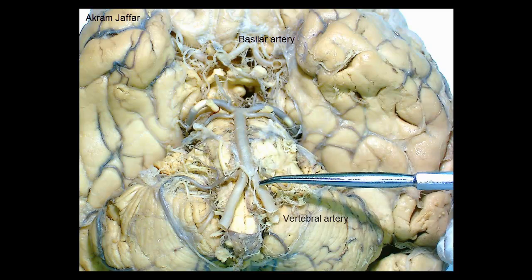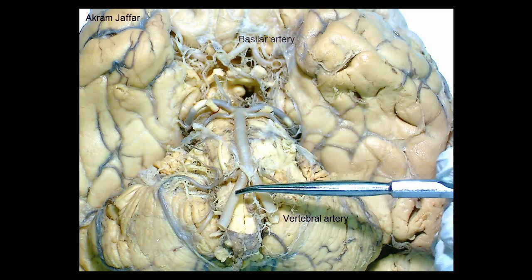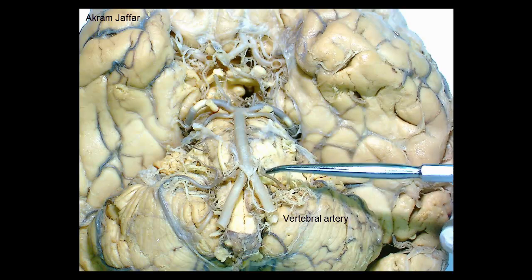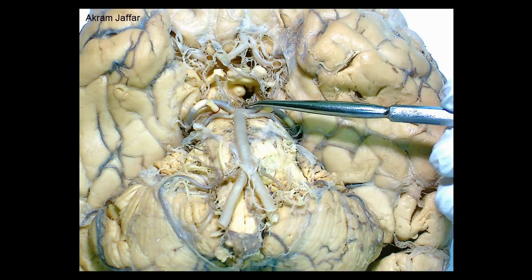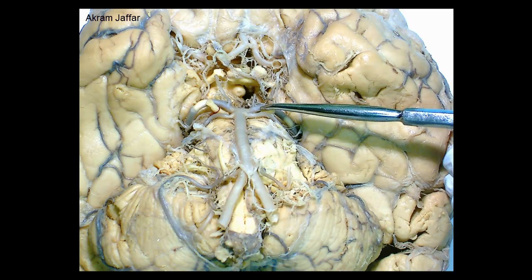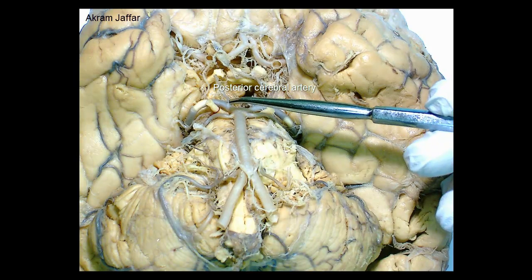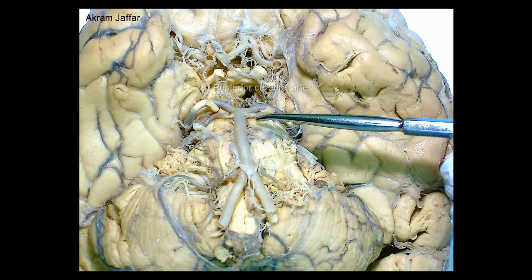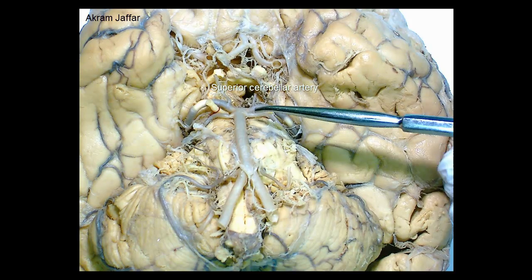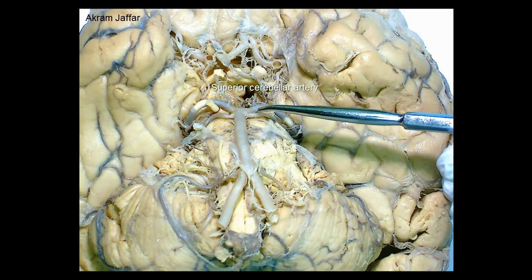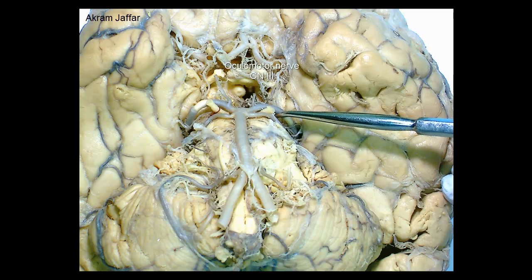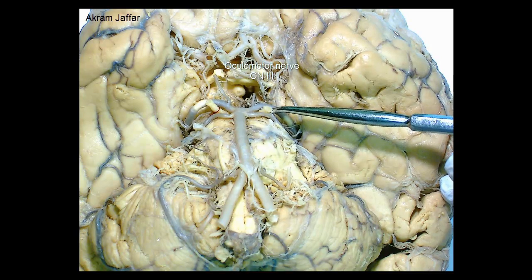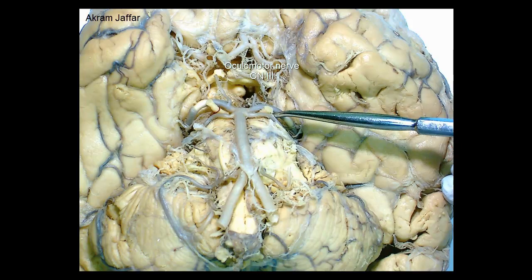This groove is where the basilar artery is located. The basilar artery is formed by the union of the two vertebral arteries, which unite at the junction of the medulla and pons. It continues upwards until it reaches the level of the midbrain, where it divides into two terminal branches — the posterior cerebral arteries. Before that, it gives the superior cerebellar arteries. Between the posterior cerebral and superior cerebellar arteries, we can see the attachment of the fibers of the oculomotor nerve.